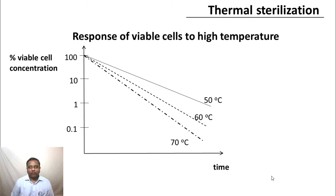This is what we saw: the thermal sterilization, the response of viable cells to high temperature. We have on the y-axis, the percent viable cell concentration on a log scale versus time on the x-axis. And the relationship is linear when this is on a log scale. Also, we said that the decrease, the slope of the decrease, increases as the temperature increases. This is the kind of response that we were trying to analyze.